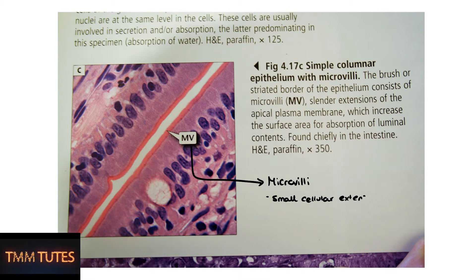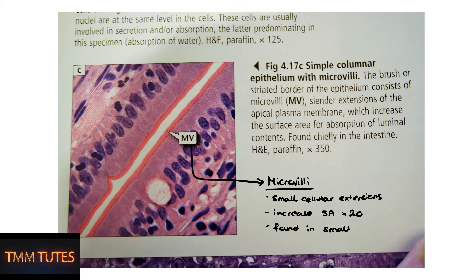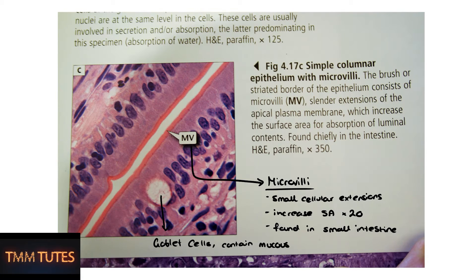For example, here we have microvilli — little branches that extend from the cellular surface, increasing the surface area by about 20-fold. These are mostly found in the small intestine and really aid in absorption.